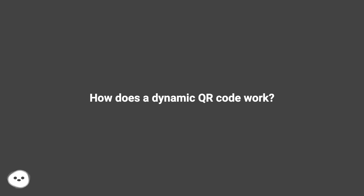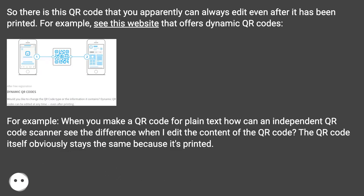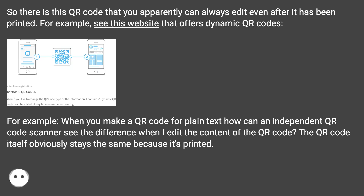How does a dynamic QR code work? There is this QR code that you apparently can always edit even after it has been printed. For example, see this website that offers dynamic QR codes. When you make a QR code for plain text, how can an independent QR code scanner see the difference when I edit the content of the QR code? The QR code itself obviously stays the same because it's printed.